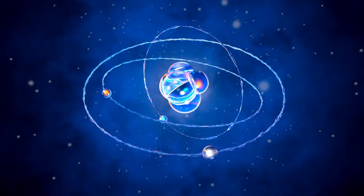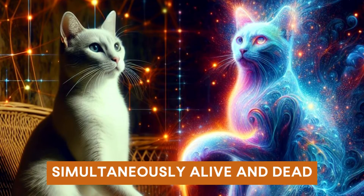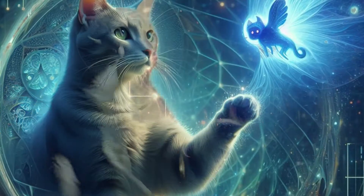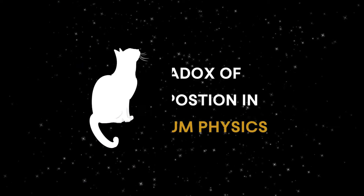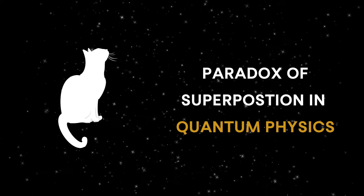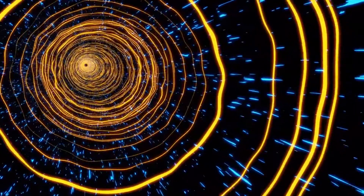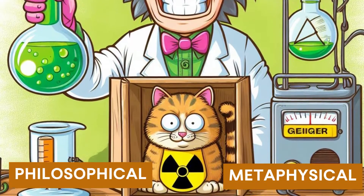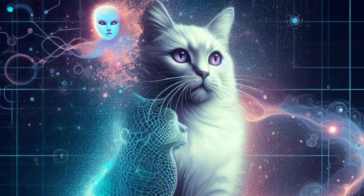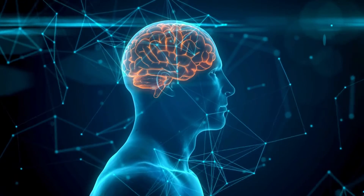A thought experiment in quantum mechanics, Schrödinger's cat features a cat that is simultaneously alive and dead, depending on an earlier random event. It symbolizes the paradox of superposition in quantum physics. Although it originated in quantum physics, this paradox has found its way into philosophical and metaphysical discussions, used to illustrate the complexity and unpredictability of reality and the limitations of human perception.